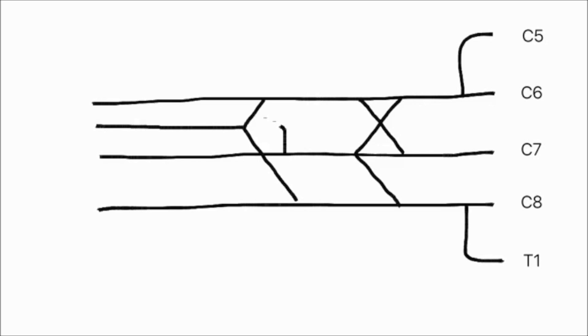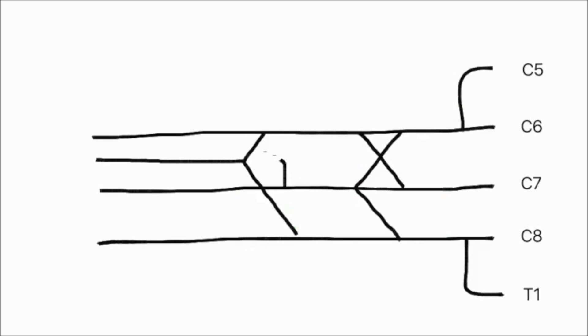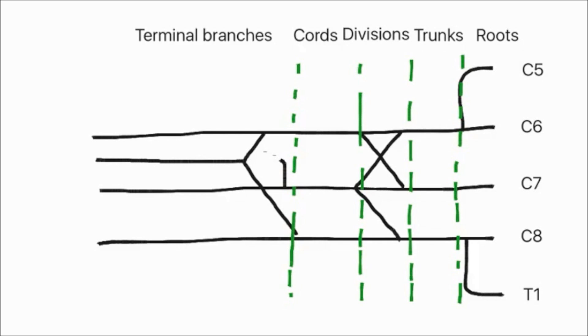This is the core of what you need to know. Ten lines on a page. Let's divide up the plexus into more manageable chunks. The brachial plexus can be divided into five sections: the roots, trunks, divisions, cords, and terminal branches.